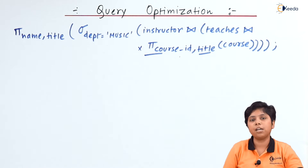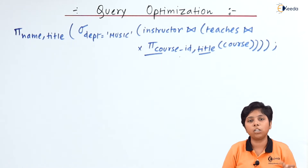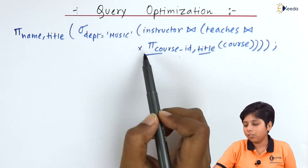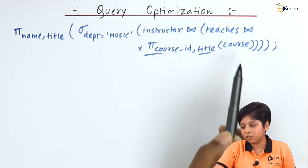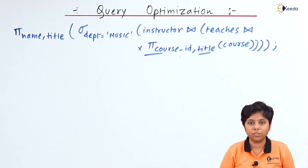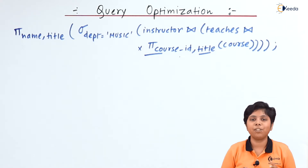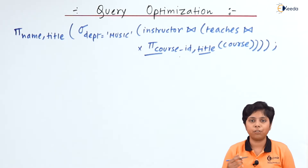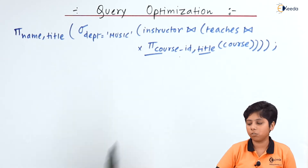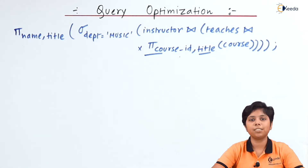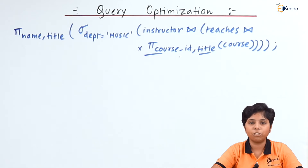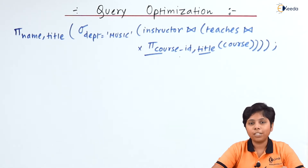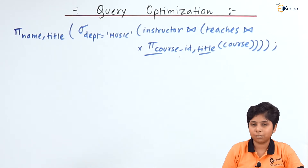In some cases, however, projection cannot be reordered — changing the ordering or removing a projection could give the exact opposite or undesired result. We now have the music department instructors with course ID and title. Before going to evaluation plans, we need to find alternative logically equivalent expressions from the relational algebra that we can form with this query.